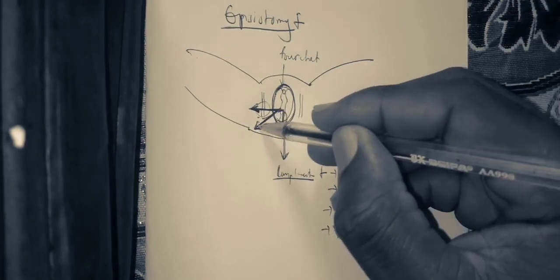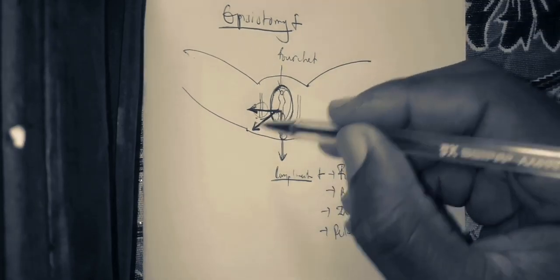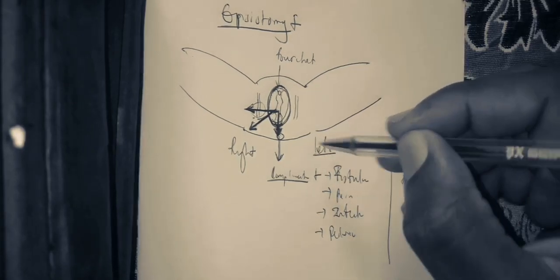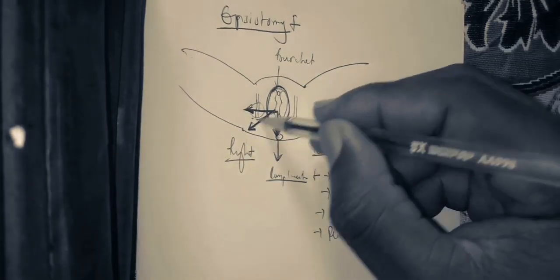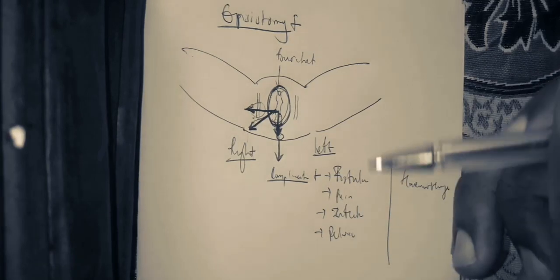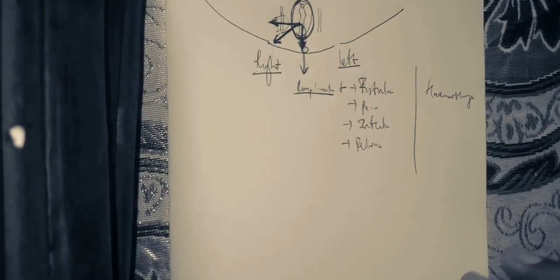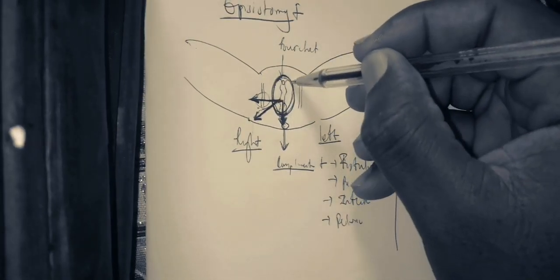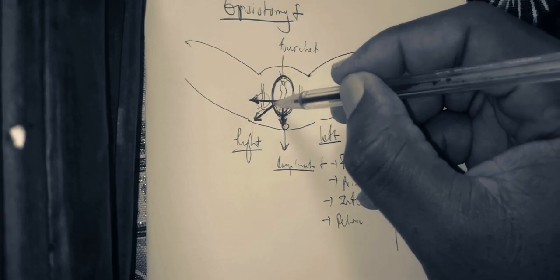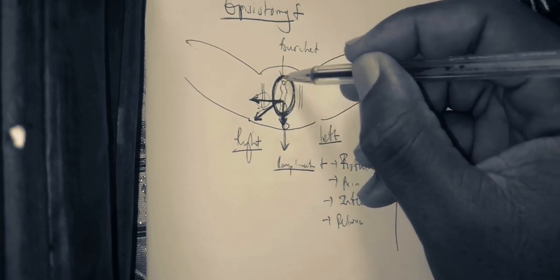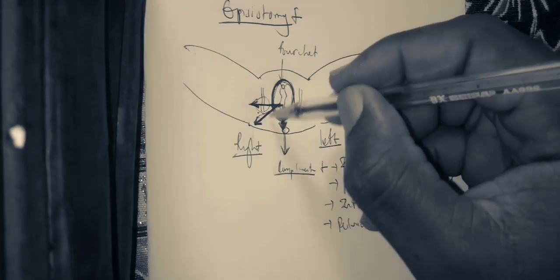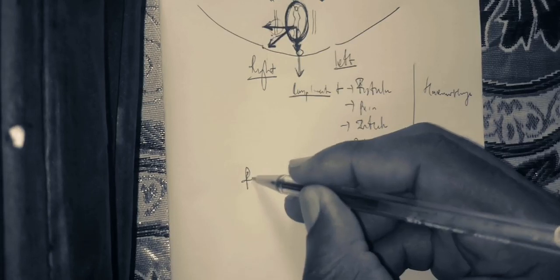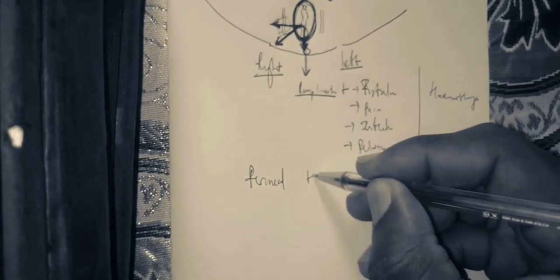The best option is mediolateral episiotomy, preferred on the right side. Episiotomy is indicated when the fetal head is larger than the pelvic outlet. After episiotomy, you also need to know about perineal tears.